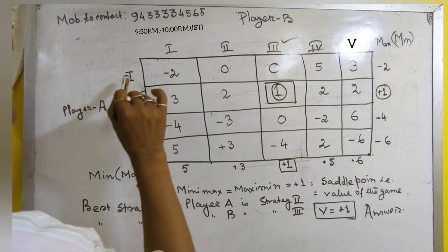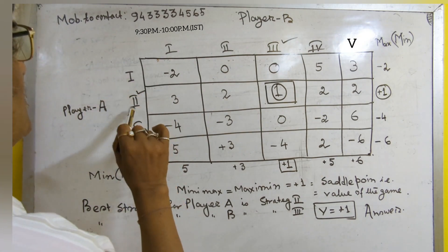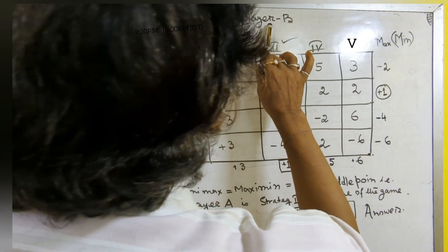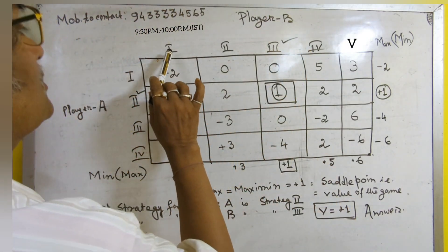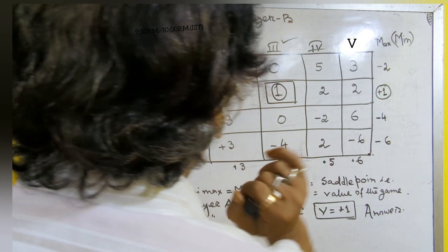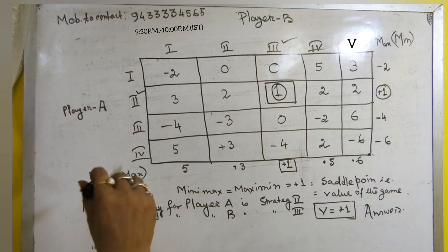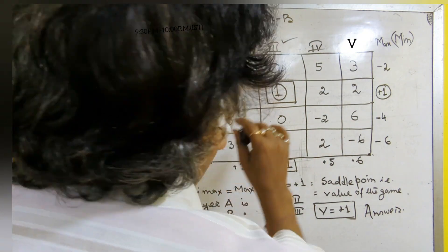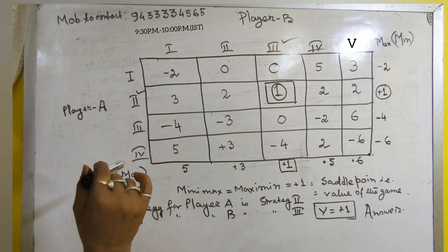Player A has 4 strategies: strategy 1, 2, 3, and 4. And Player B has 5 strategies: 1, 2, 3, 4, and 5. The payoffs of the matrix are written on the payoff matrix.